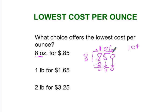1 pound for $1.65. Again, it's a division problem. And there's 16 ounces in a pound. We did 8 ounces before, but now we're looking at 16 ounces. Decimal point up at the top. 16 times 1 is 16.